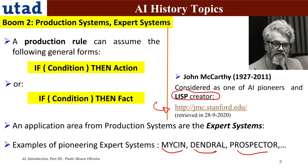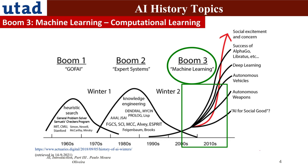There was a big expectation about production systems, but then in application at the time it didn't work that well. So we are now leaving Boom 2 and entering what you can call Boom 3 — machine learning.